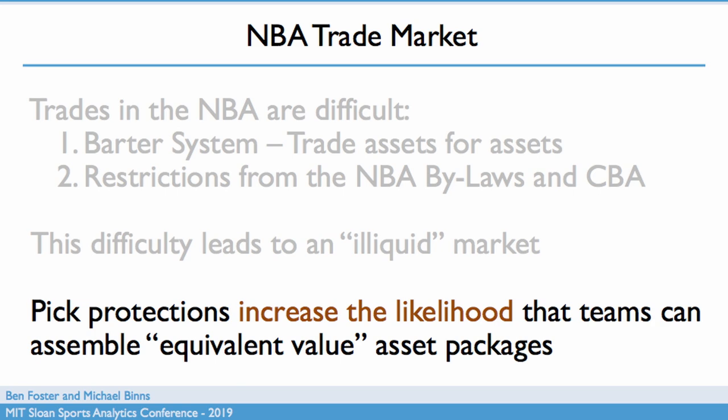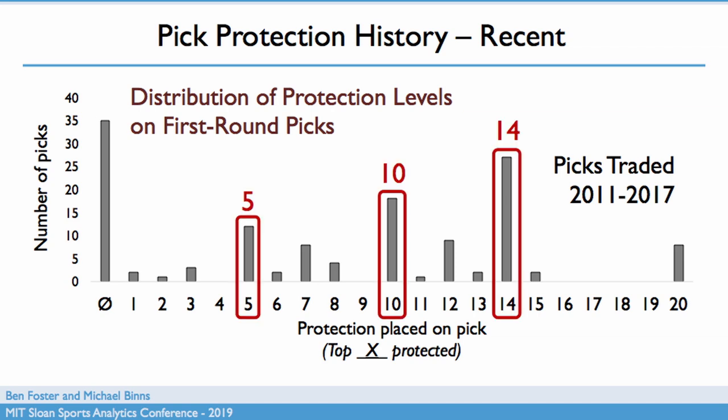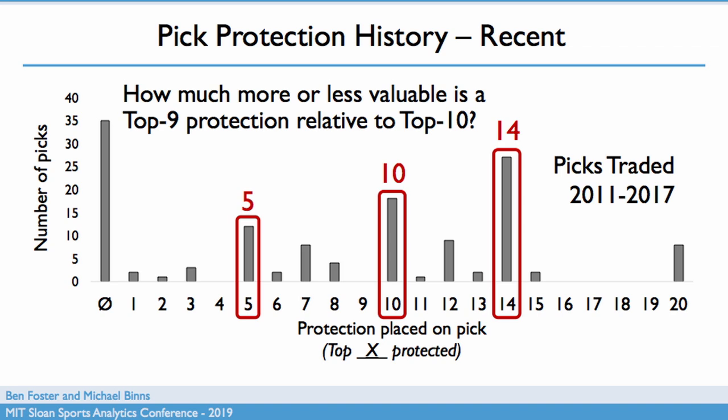Teams understand this and use pick protections all the time. This figure shows picks traded from 2011 to 2017, with level of protection on the X-axis and number of picks on the Y. There are three clusters: top five protected, top 10 protected, and top 14 protected. If teams are using protections to tailor the value of a draft pick, it's quite odd that so many trades required a top 10 protection rather than top nine or top 11 — there's actually only one top 11 protection in this dataset. Our hypothesis is that teams have a difficult time precisely quantifying the difference between, say, top nine, top 10, and top 11. As a result, they end up on a round number — we call these psychological anchors in the paper.